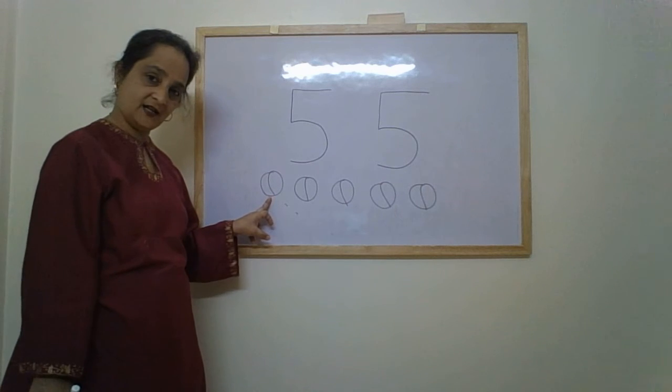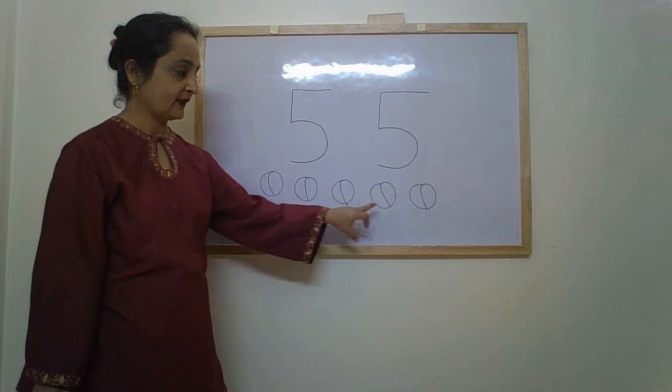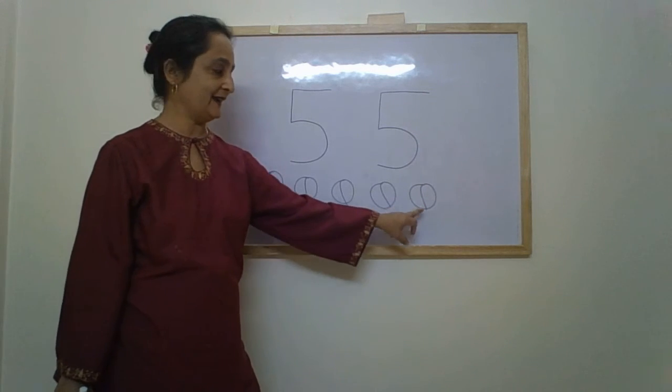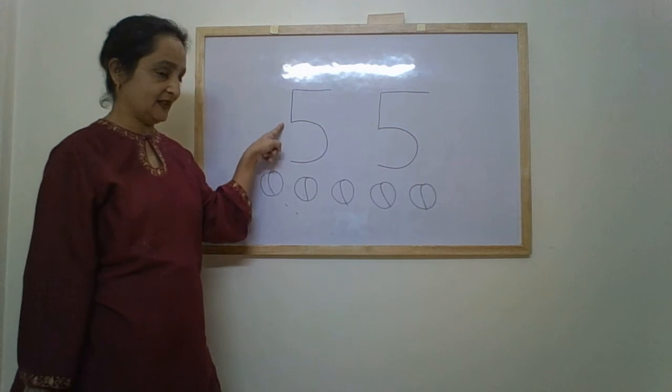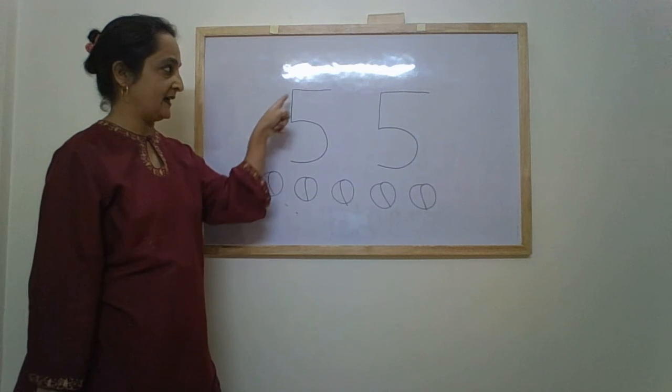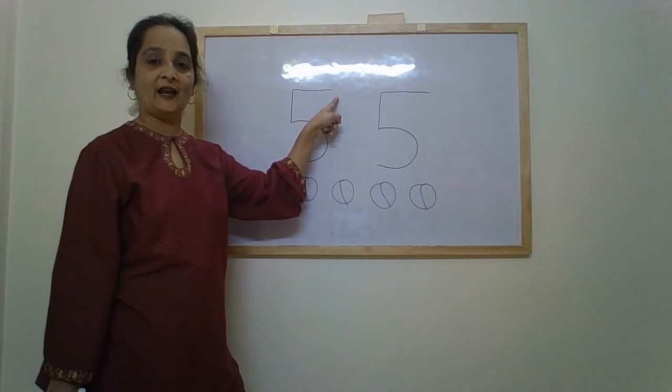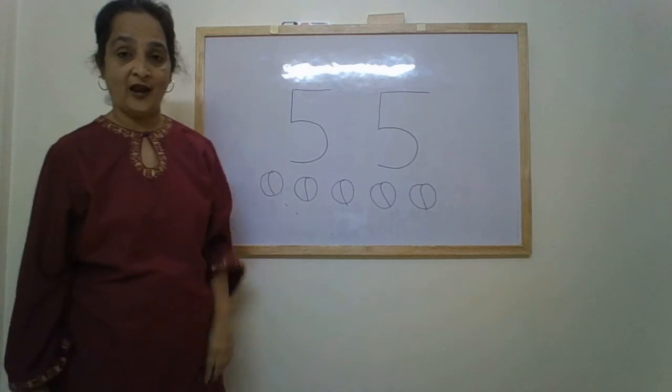1, 2, 3, 4 and 5. And how do we write number 5? A standing line, a forward curve and a sleeping line on top. This is number 5.